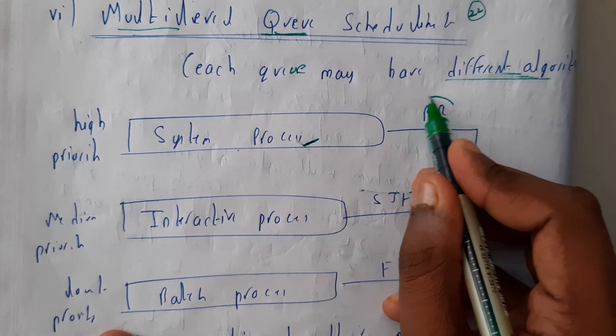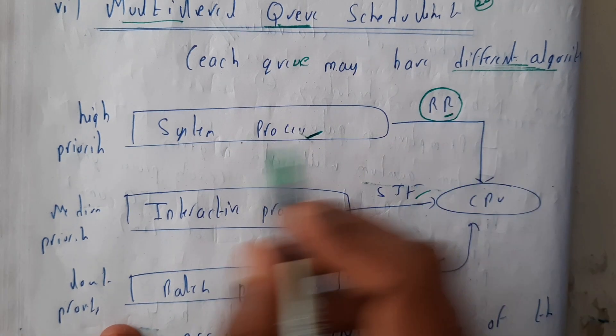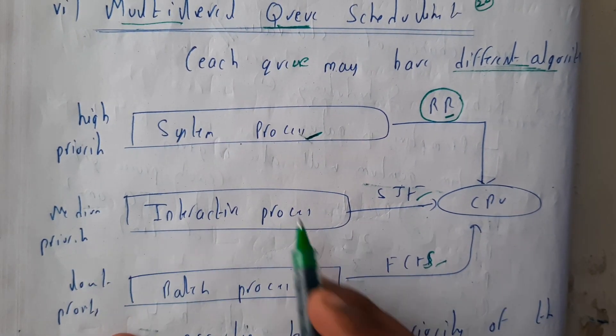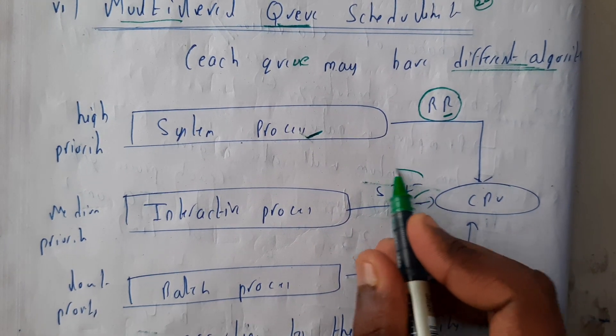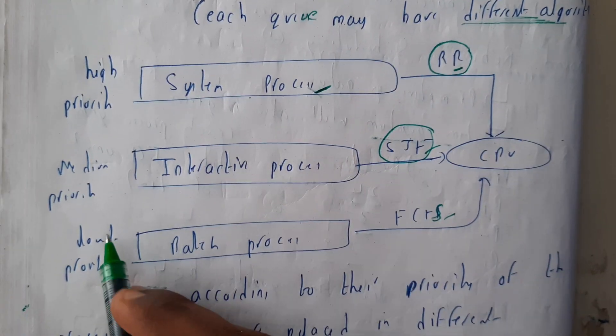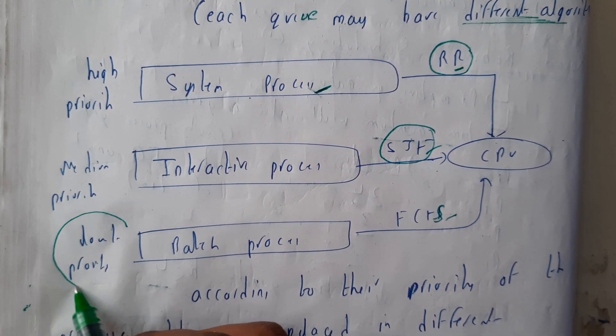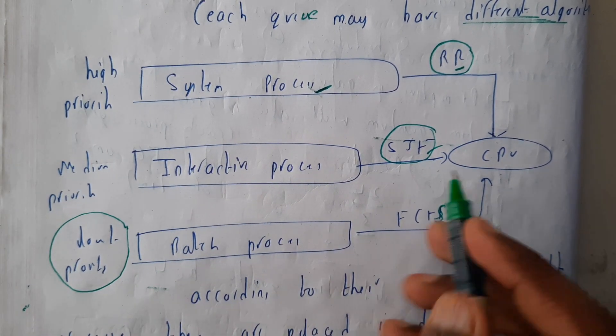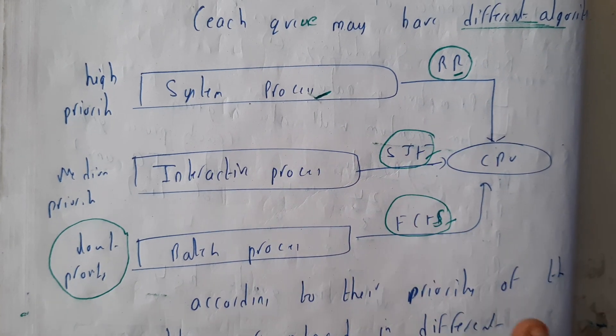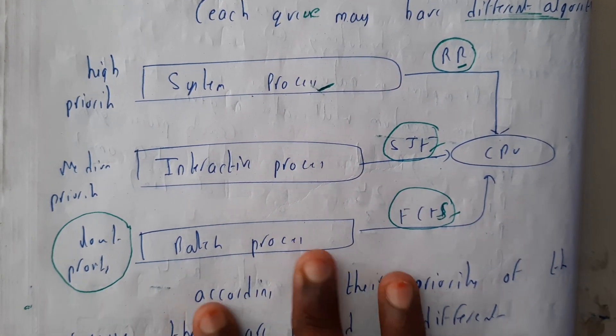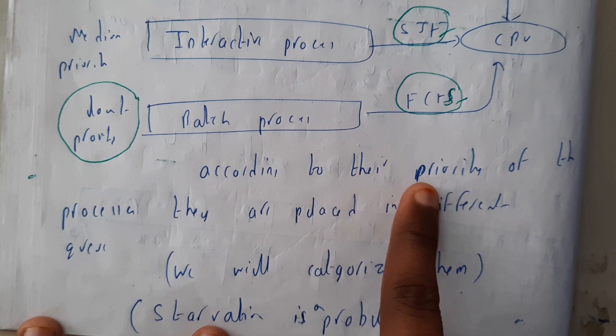They are given with round robin. Similarly, medium priority are interactive processes. Those are given with shortest job first, and the low priority are batch processes. They are given FCFS. So we can give different things, guys. These are not fixed. You can write anything in an example, it's fine.